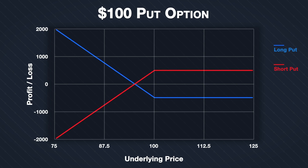Any profit made by the put option buyer will result in an equal loss made by the put option seller. Conversely, any loss made by a put option buyer will result in an equal profit made by the put option seller. This relationship means the profit or loss chart for the put option seller is similar to that of the buyer, but flipped around the x-axis.